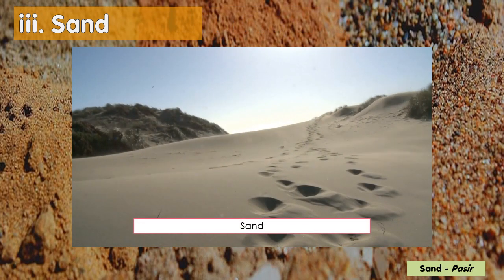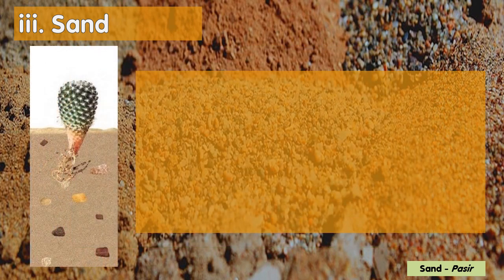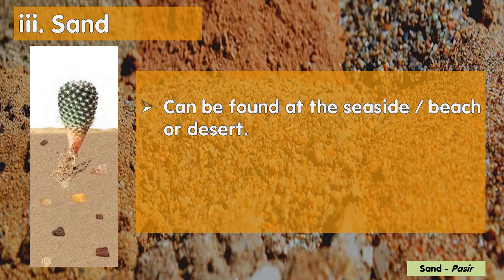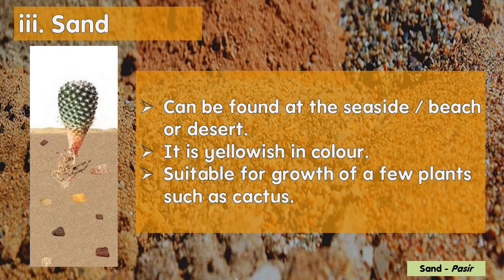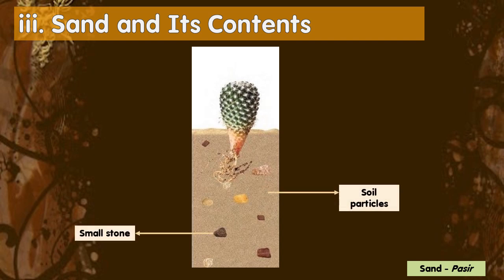The third type of soil is sand. Sand can be found at the seaside, beach, or desert. It is yellowish in colour. Sand is suitable for growth of a few plants which do not need much water, such as cactus. Sand contains soil particles and small stones, so it does not hold water very well.